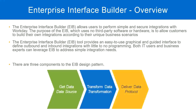We are going to configure these three steps. First, where are we going to get the data from — that is something we configure. Second, do we need transformation? If yes, configure it; if no, leave it blank. Third, how are we going to deliver the data to an external system — we configure that as well. Once we complete these three steps, our EIB is ready and we can start exchanging information between Workday and an external system.